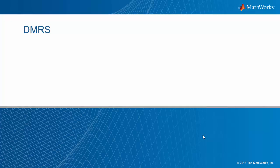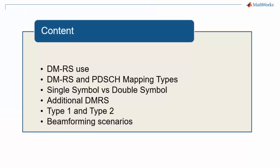This is a new episode of our series 5G Explained. In this video we discuss the demodulation reference signals or DMRS in 5G New Radio. We will look at what DMRS are used for and detailed parameters that configure their number and positions, including PDSCH mapping type, single versus double symbols, additional DMRS, as well as types 1 and 2. We will discuss the application of these configurations to different beamforming scenarios.